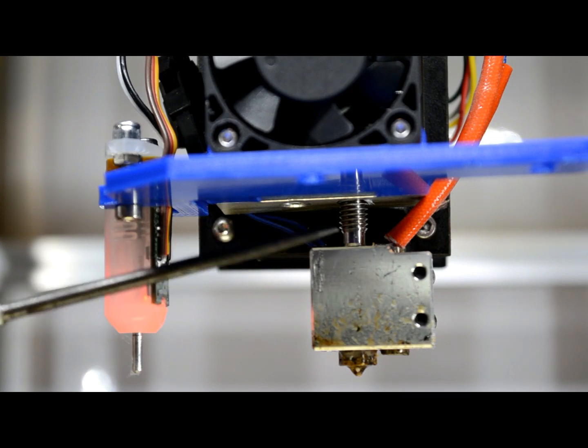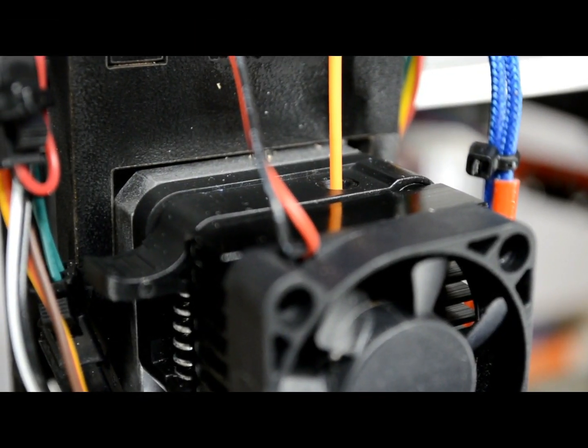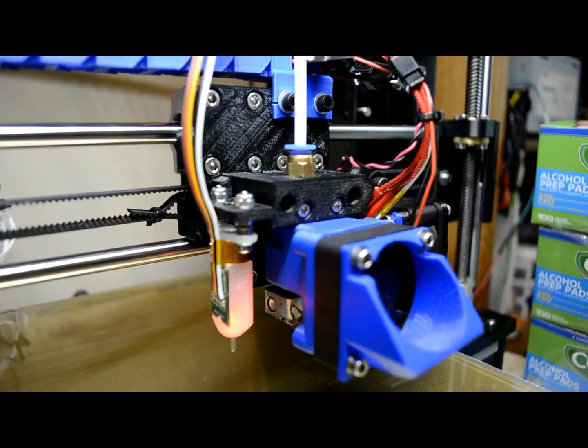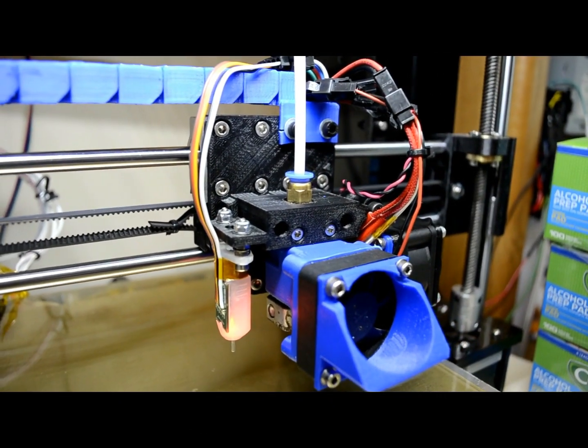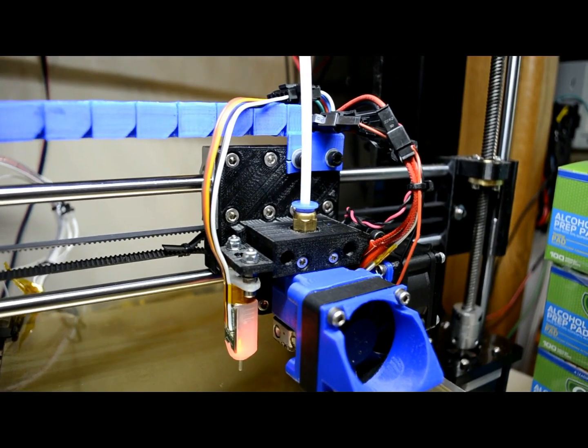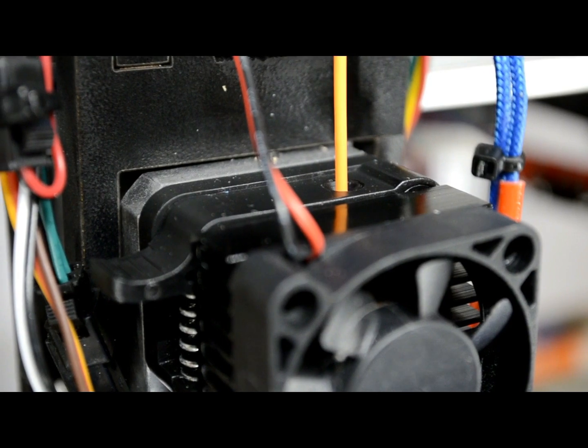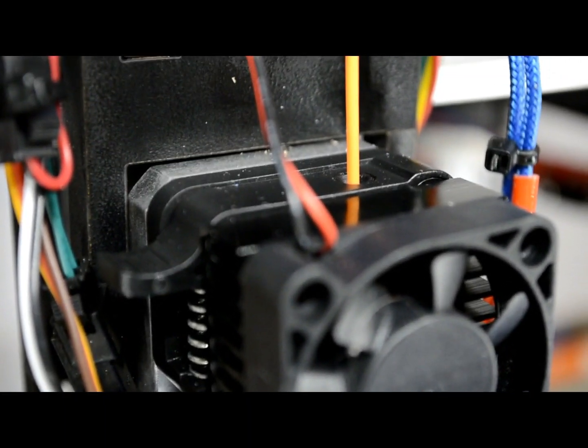Now moving past that is where we get into terms like direct and Bowden setups. Above the cold end of the extruder rests one of two things. Either you have a NEMA stepper motor with a hobbed gear, or you have a PTFE Teflon tube poking in the top with some form of pressure lock like on small water lines. We call the motor being directly on top of the cold end a direct drive setup.